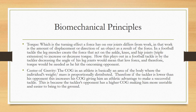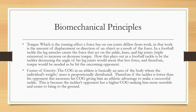The last two biomechanical principles are torque and center of gravity. Torque is the turning effect a force has on our joints — it's the amount of displacement or direction of that object as a result of that force. In football, it's our leg muscles that create the force acting on our ankle, knee, and hip joints. If an athlete is too high, meaning a greater degree of angle in their hip, knee, and ankle joints, they have to produce an extreme amount of force to produce the same amount of torque. Vice versa, if they're too low with a small degree of angle, they still have to produce extreme force for the same torque. There is a happy medium where the athlete's positioning doesn't require too much force to achieve the appropriate amount of torque.